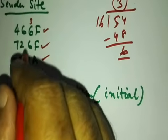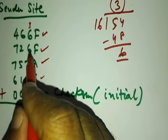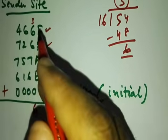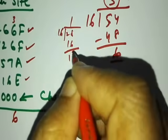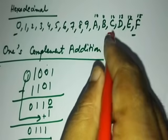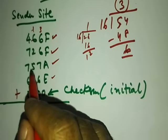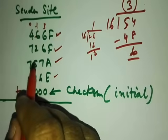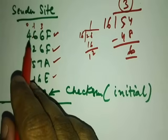For the next column: 6 plus 6 is 12, plus 6 is 18, plus 3 is 21, plus 7 is 28. 28 divided by 16 gives 1 remainder 12. So carry is 1 and 12 indicates the value c. Then: 6 plus 1 is 7, plus 8 is 15, plus 5 is 15 — that's f, and carry is 0.